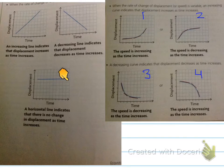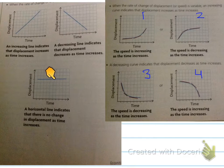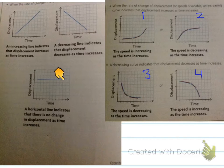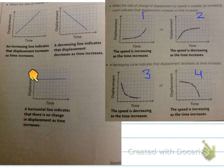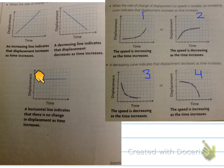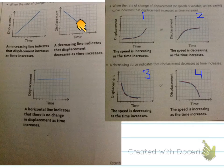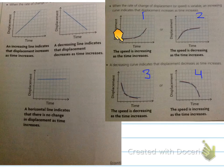When we have a horizontal line, one might think the speed is constant, but actually the speed is zero. It is zero because there is no displacement over a set period of time. So a horizontal line means no displacement over a set period of time, which means zero speed. So: here speed is constant, here speed is constant, and here speed is zero.